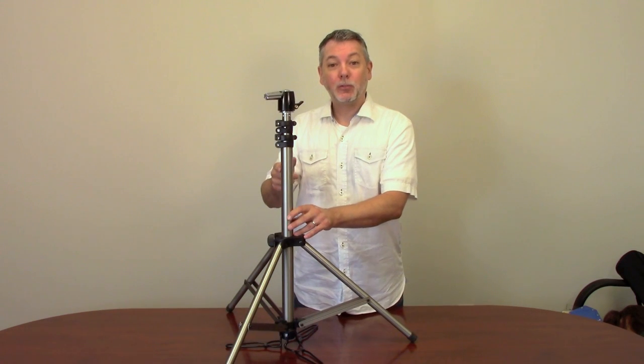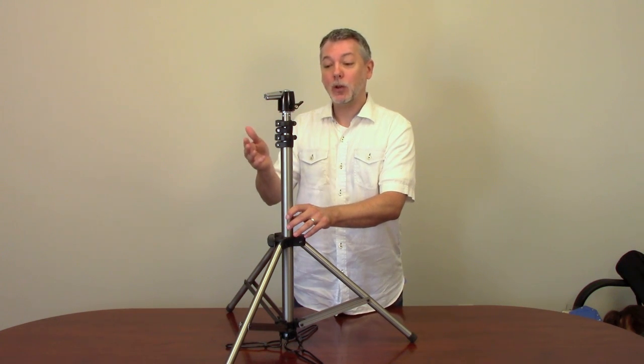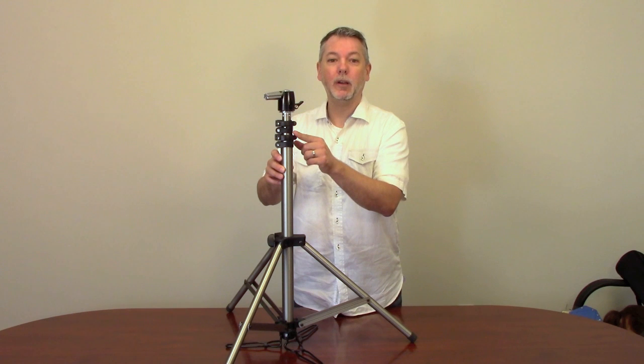Now for the height of the tripod there are two telescopic sections that can be raised or lowered. To do so you simply need to open these clamps here one at a time.